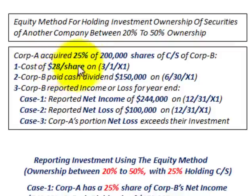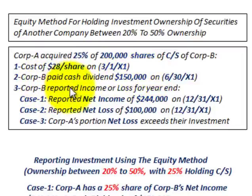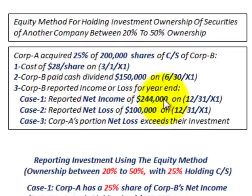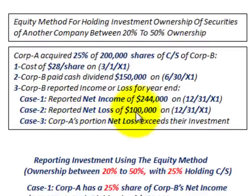Corporation B paid a cash dividend for the year of $150,000. We're going to look at three cases: Case One, where Corporation B reported net income of $244,000 for the year; Case Two, where they reported a net loss of $100,000; and Case Three, where Corp A's portion of the net loss exceeds their investment in Corporation B.